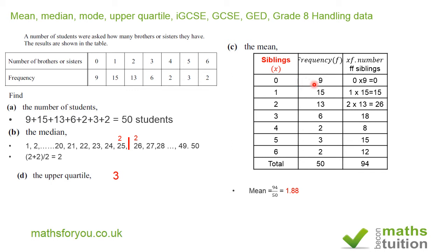So up to the ninth student we're in this category here. So 12.5, because 9 plus 15 is 24, so the 12.5th student or the 25th percentile will be in this category here. So the lower quartile in this case is just 1.